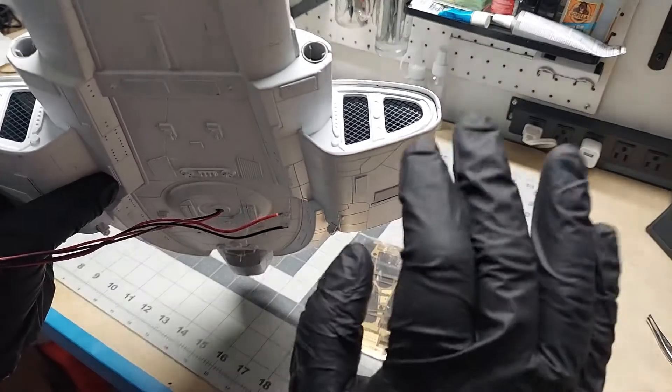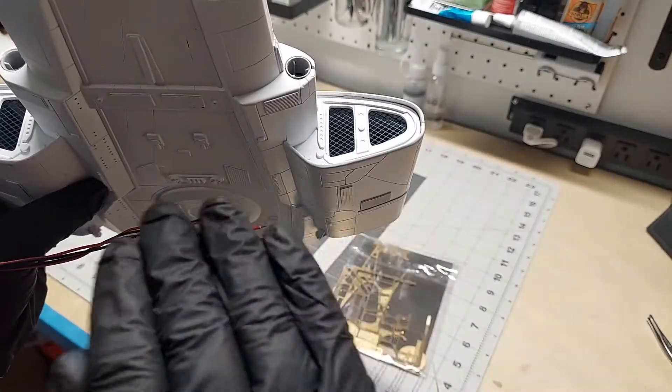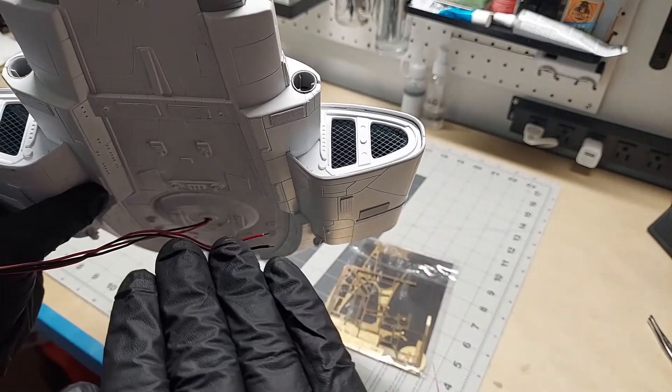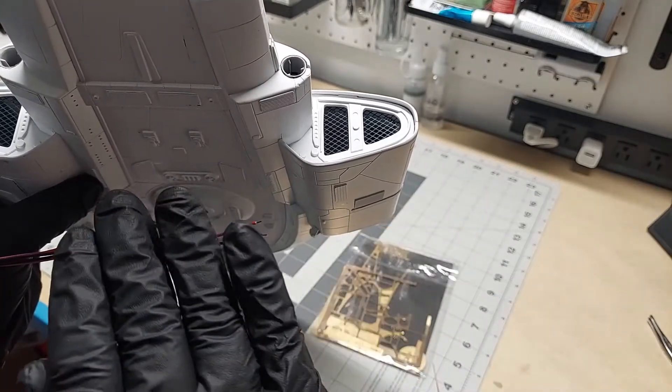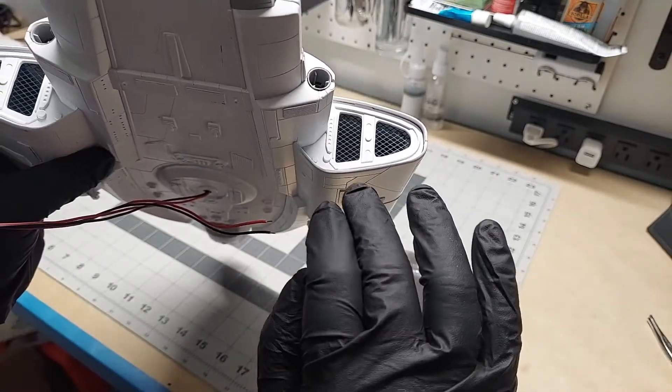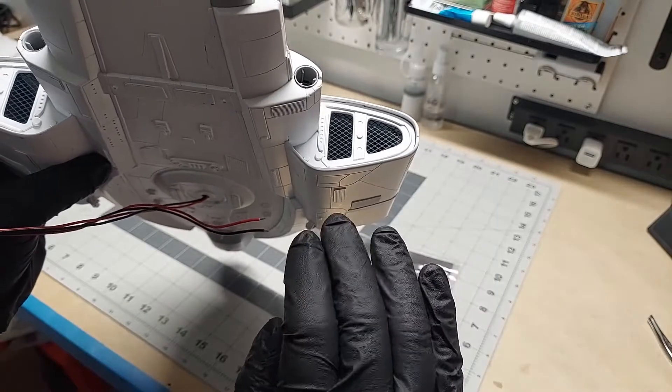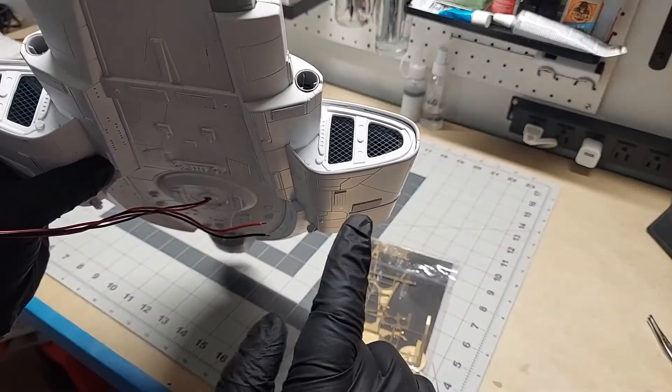Those were part of the photo etch kit, and they wouldn't look right if they were just the plain brass finish. They needed to be dark, and I decided I didn't want to paint them because I wasn't confident I could get a nice even coat of paint that wouldn't be globby and thick and uneven.